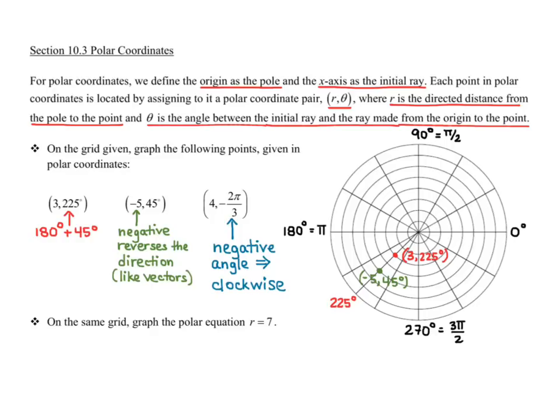For the third point, a negative angle means we're going clockwise from the x-axis. So for (4, -2π/3), we go clockwise 2π/3 from the x-axis to find the angle. My r is 4, so I count out 4 spaces from the origin to get the point (4, -2π/3).